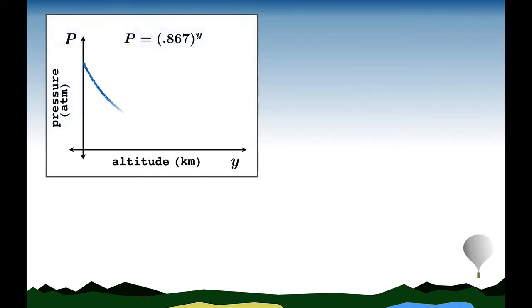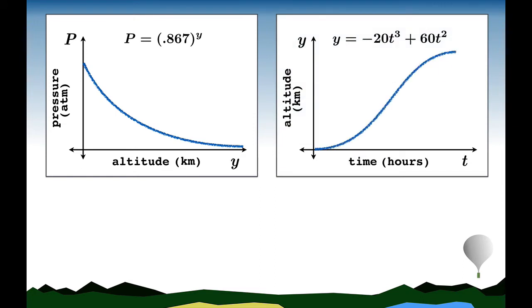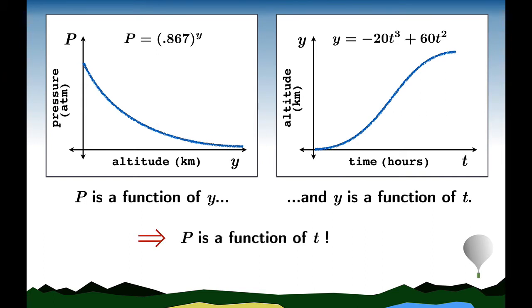We know that the pressure decreases exponentially as a function of the altitude. And in fact, if you measure pressure in atmospheres and altitude in kilometers, the formula for this is roughly p equals 0.867 raised to the y. And let's suppose that the balloon rises in such a way that its height is a cubic function of time. So if we're measuring the altitude in kilometers and the time in hours, let's suppose that the altitude is given as negative 20t cubed plus 60t squared. Taking a step back, we'll notice that p is a function of y, and in turn, y is a function of t. Putting these together, you realize p is a function of t, and this is an example of what we call composition in precalculus.